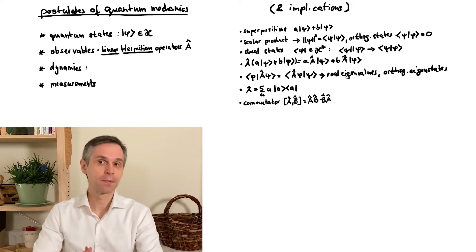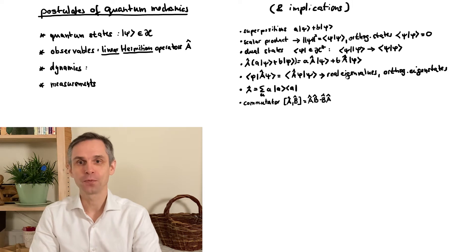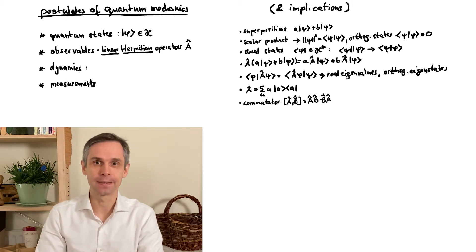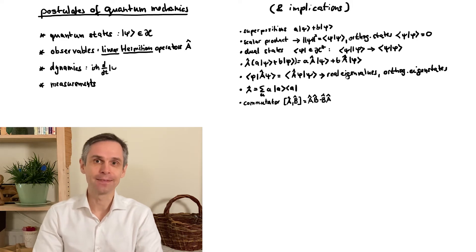So thirdly, we stipulate that there is a particular operator, which we call the Hamiltonian, which generates the dynamics of the state, so tells us how it changes over time. And it does so by the time-dependent Schrödinger equation, which now reads as given here.